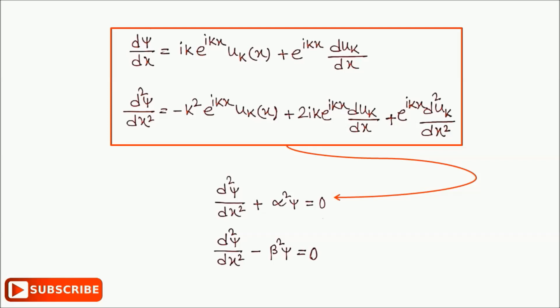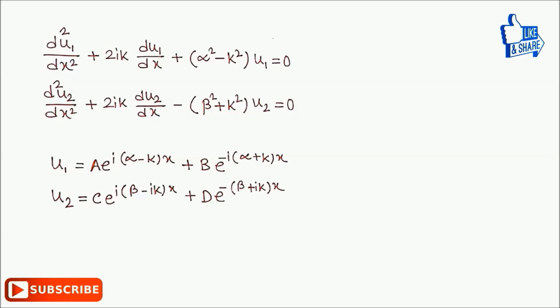Now substituting the equations in the previous week, we get those equations like this, where u₁ and u₂ represent the value of the u_k function of x in the interval 0 < x < a and -b < x < 0, respectively. Now the general solution of these equations are u₁ and u₂ like this, where A, B, C, D are constants.